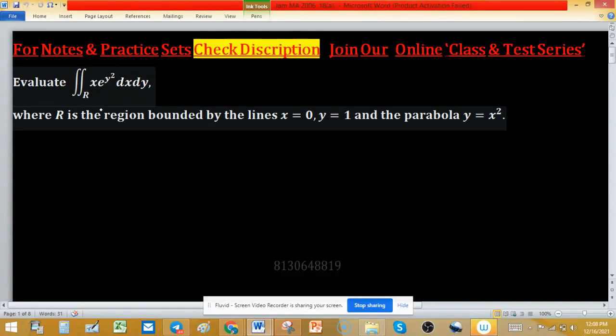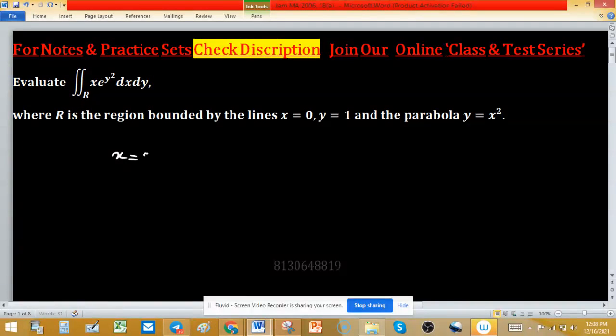This double integral over the region R, where R is bounded by x equals 0, y equals 1, and the parabola y equals x squared. First, draw this region. Suppose this is y equals x squared.